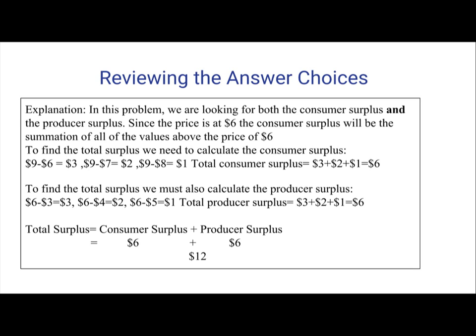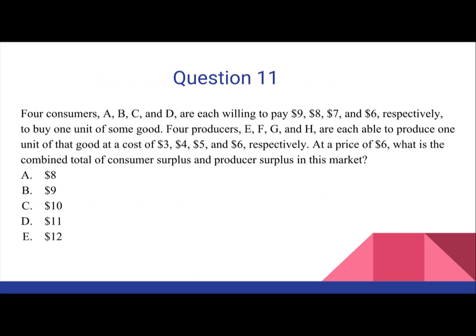How am I getting the producer surplus in this problem? We can see that the producers are E, F, G, and H, and they are producing one unit of good at a cost of $3, $4, $5, and $6. I didn't include $6 because $6 minus $6 would equal $0. Basically, you subtract the price of $6 minus the cost of producing one unit of that good for each of the producers.